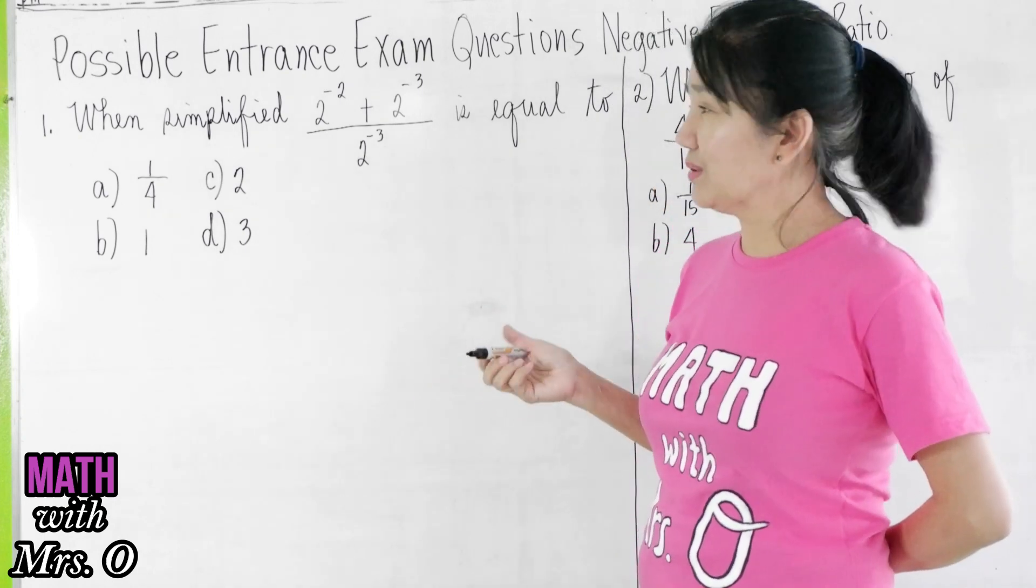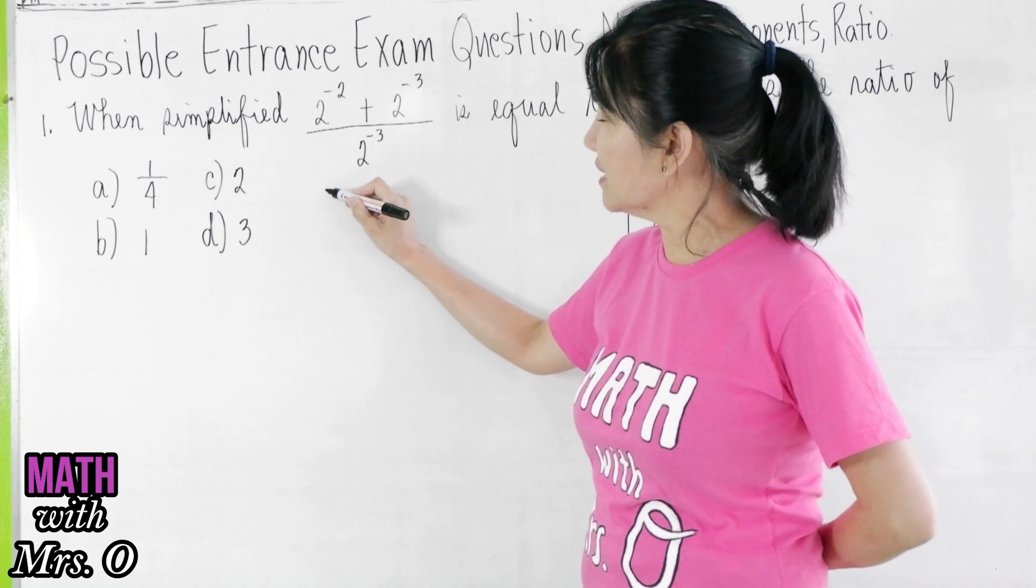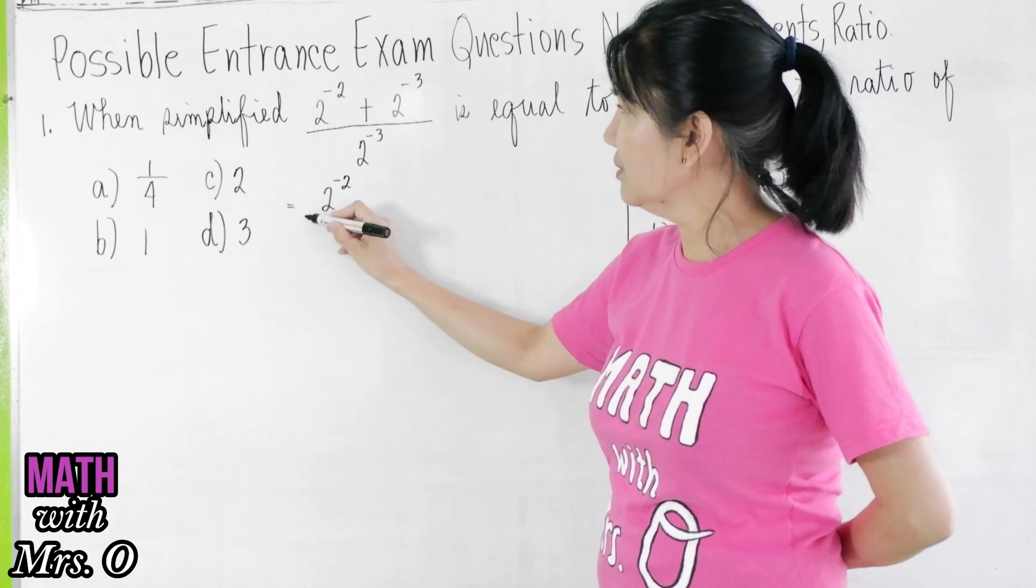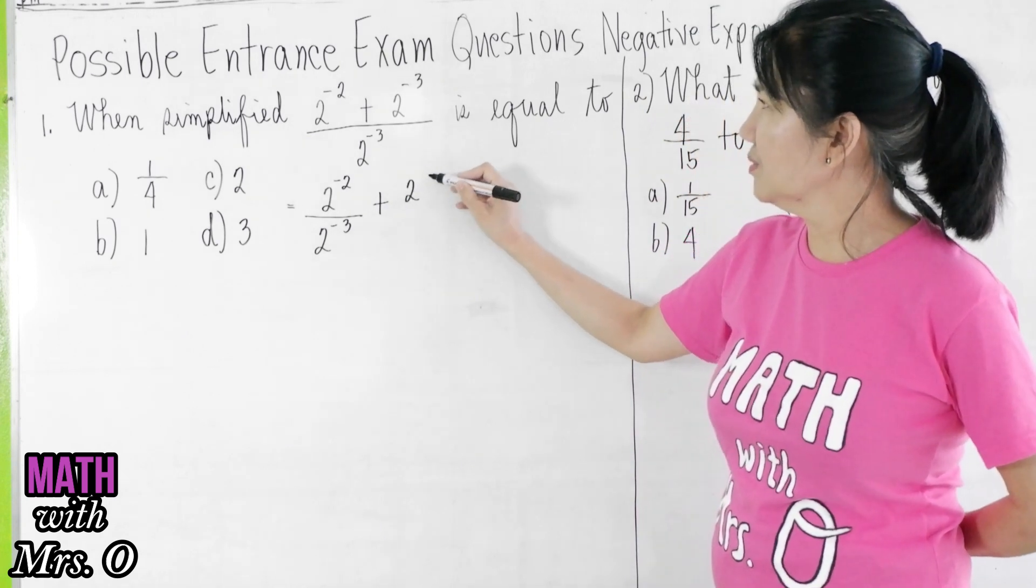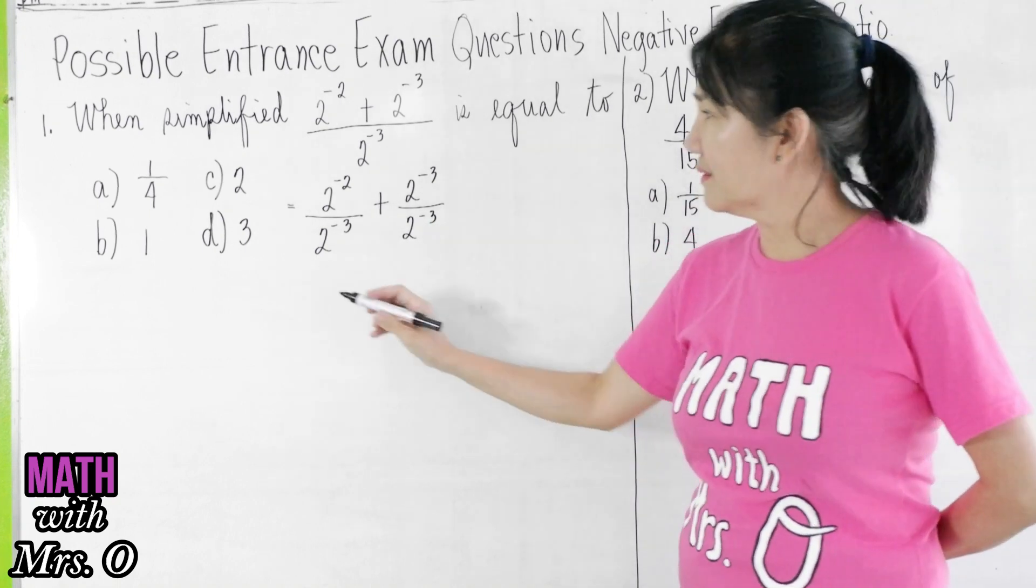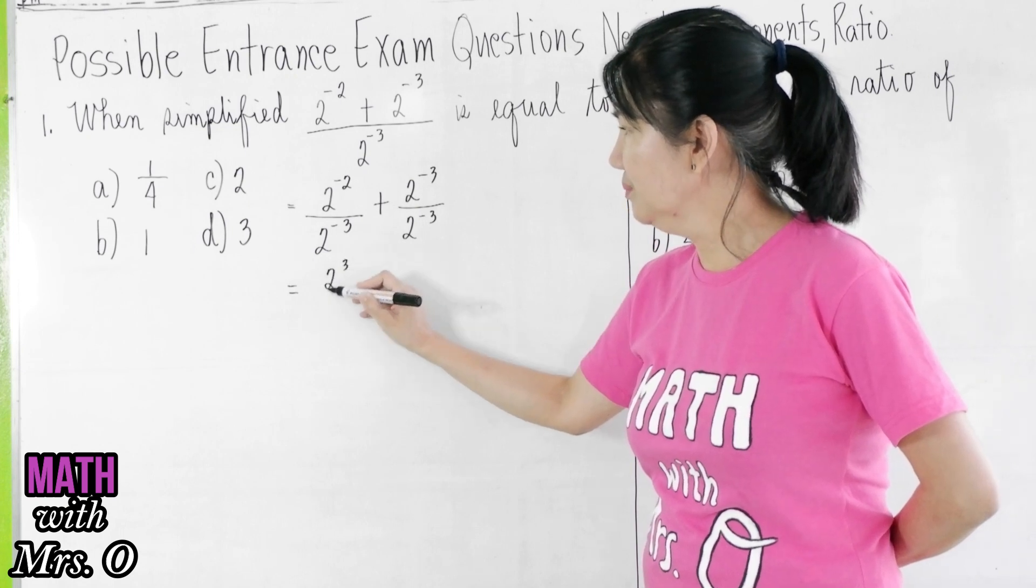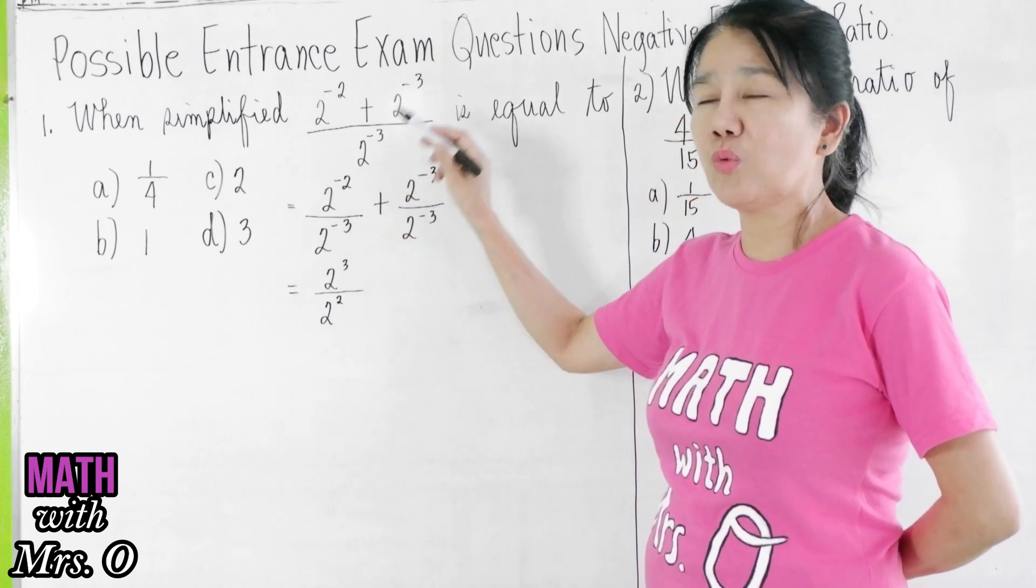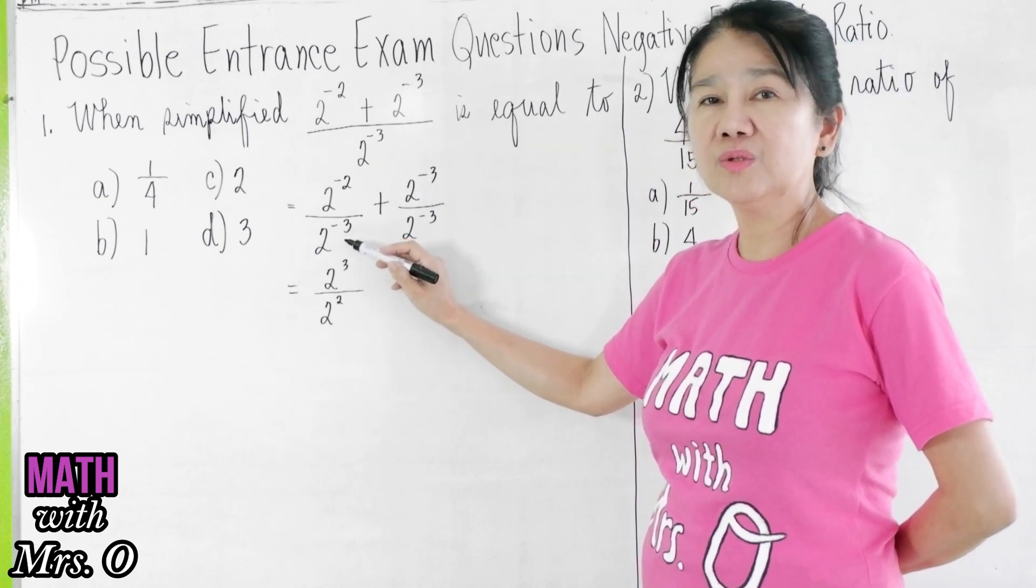Now I'm going to show you the solution. How do you solve for this? Solution number one: one way of solving it is this is equal to 2 to the negative 2 all over 2 to the negative 3 plus 2 to the negative 3 all over 2 to the negative 3. Then, this is now equal to 2 cubed all over 2 squared. Remember, 2 to the negative 2 is equal to 1 all over 2 squared, and 2 to the negative 3 is also equal to 1 all over 2 cubed.